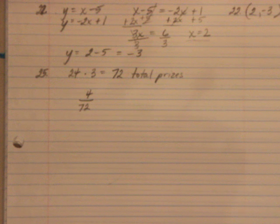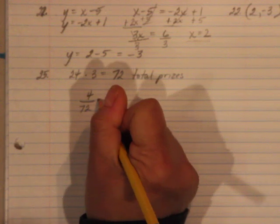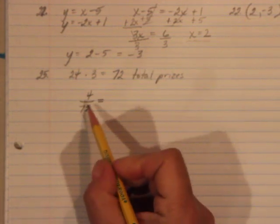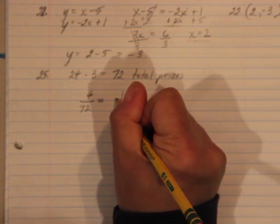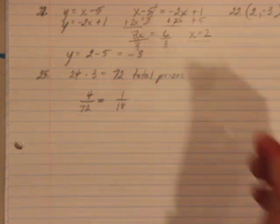So if I simplify this, can I reduce this at all? And the answer is yes, I can. And I am going to reduce this by a factor of four, because four goes into 72, and I will end up with a 1 in 18 chance.